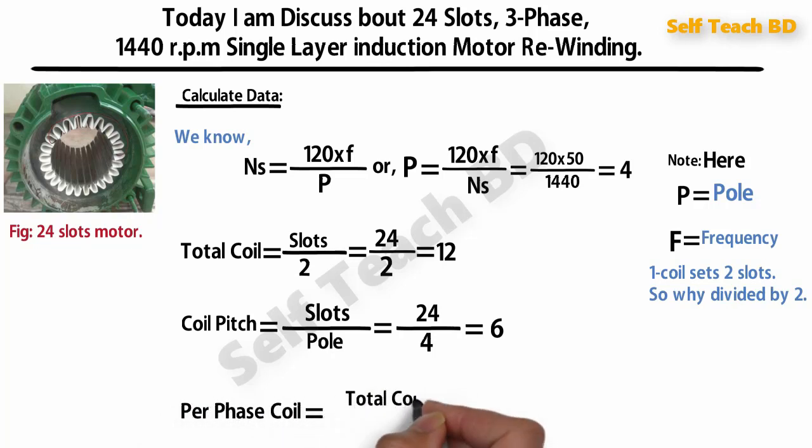Per phase coil: total coil divided by phase. Here total coil we find 12 and phase, our phase is 3, so it is equal to 4.